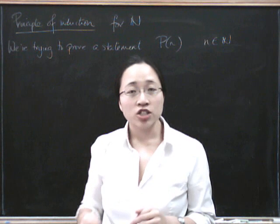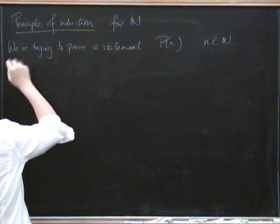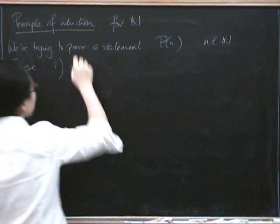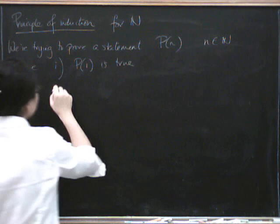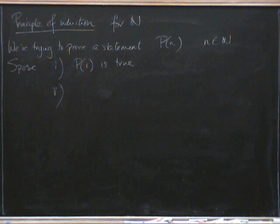First of all, we have to check the case for N equals 1. So suppose two things are true. One, P(1) is true. So that's the base case that we always have to check.